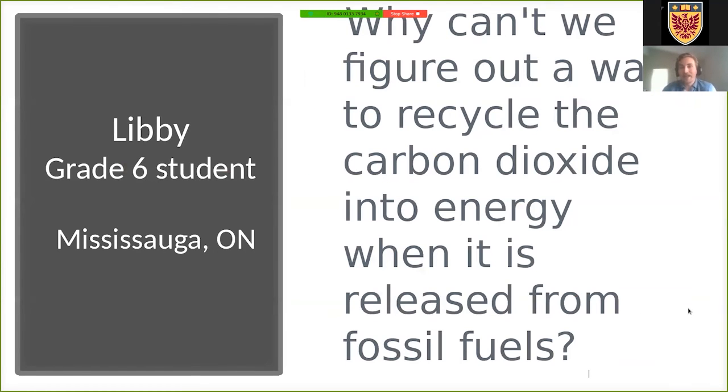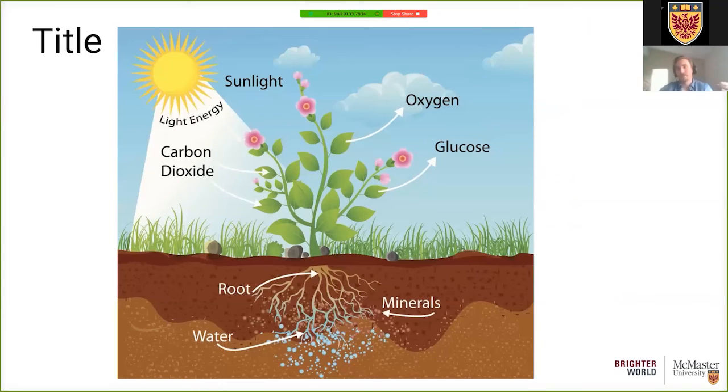So Libby asks, why can't we figure out a way to recycle carbon dioxide into energy when it's released from fossil fuels? That's a really awesome question. And in fact, on Earth, there is already a whole collection of species that have figured out how to do this. Plants take energy from the sun. They take oxygen from the air. They take minerals and sugar and they mix those with carbon dioxide to produce energy and to build their structure up.